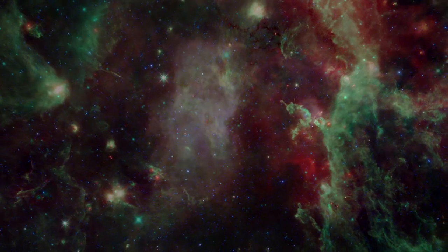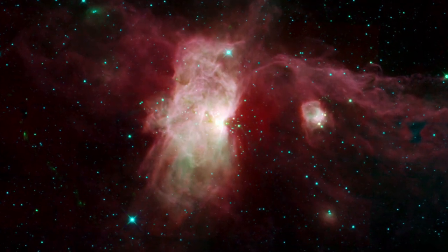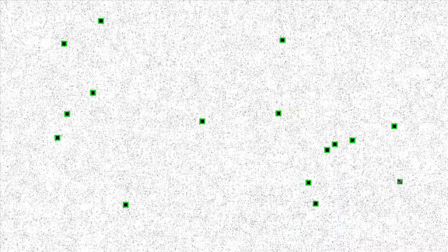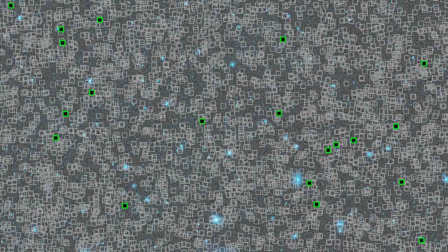The WISE mission imaged about half a billion objects all over the sky. Only a small fraction of these sources are actually stars with disks. We can't find them with computer software because the clues are too subtle.